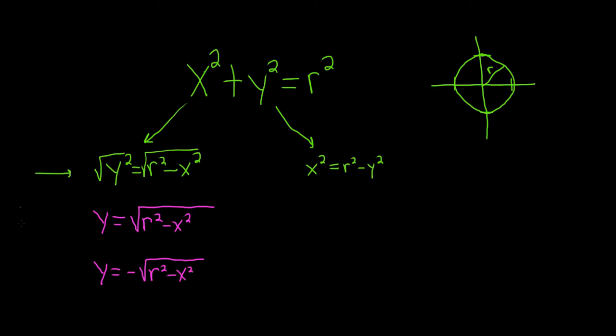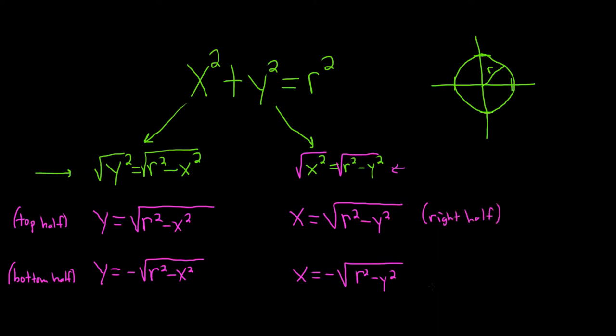This first one represents the top half of the circle, and the second equation gives you the bottom half. What about over here? If we do the same thing and take the square root, we would get x equals, well again, two answers. One would be the square root of r squared minus y squared, and the other would be x equals minus the square root of r squared minus y squared. This first equation would be the right half of the circle, and the second would be the left half.